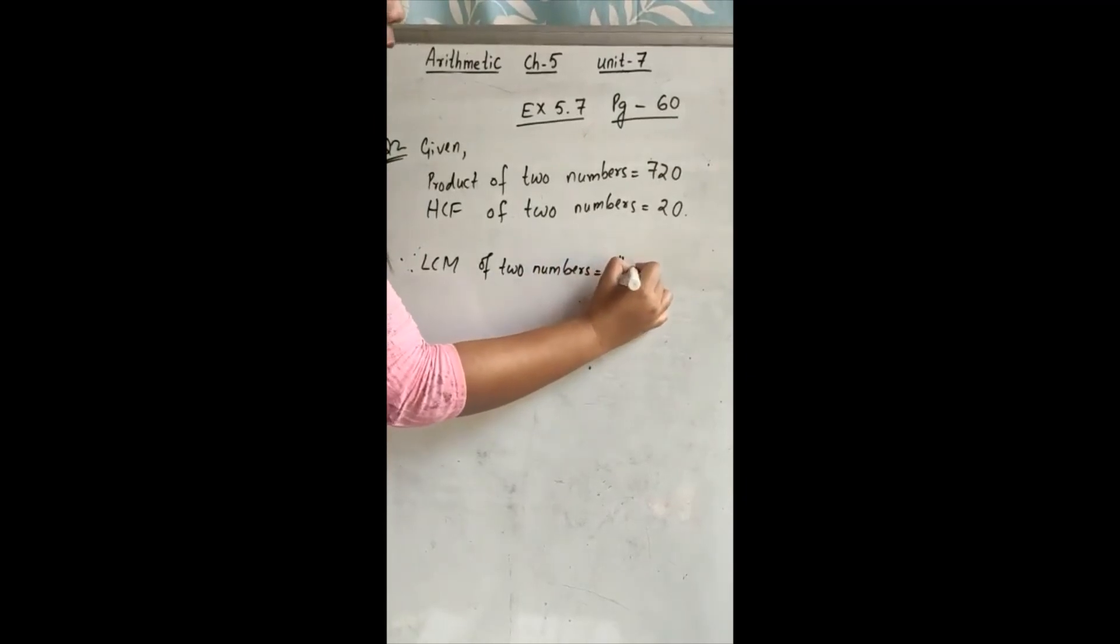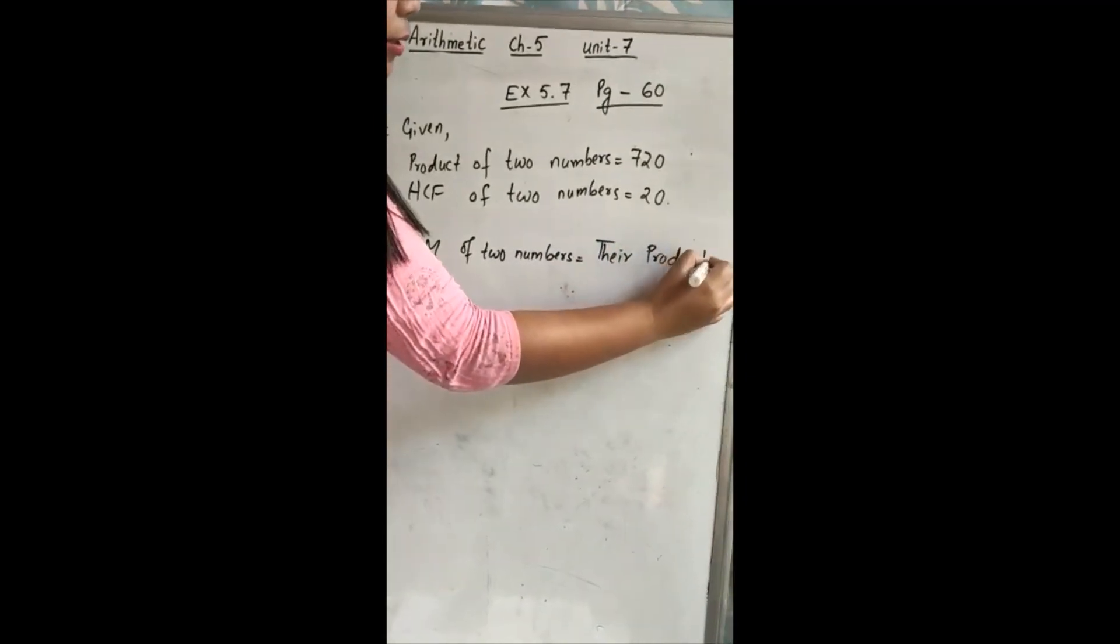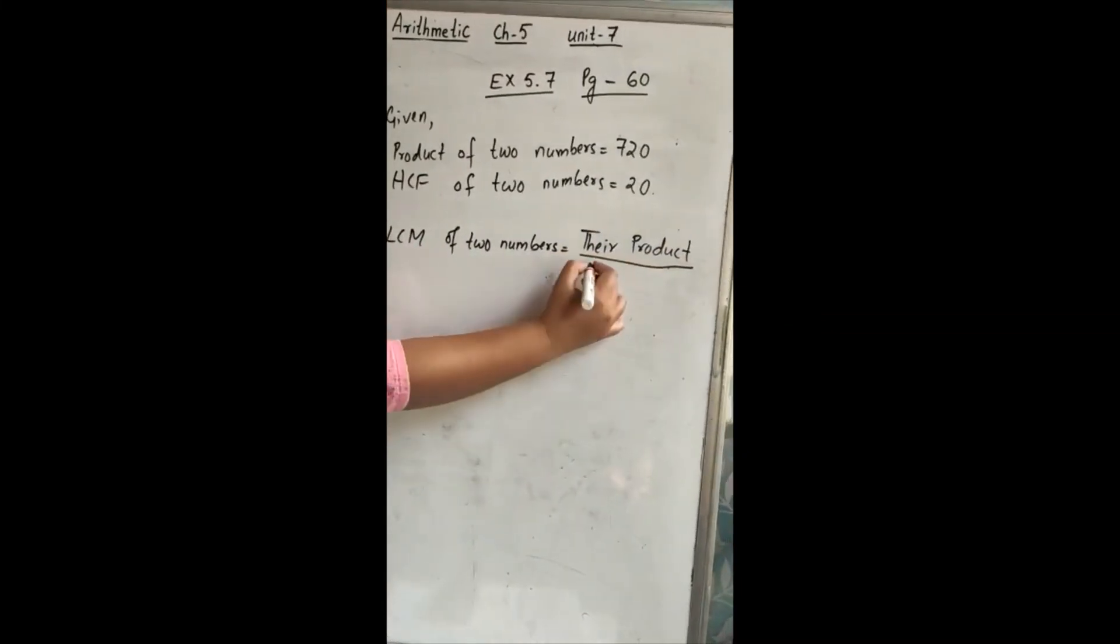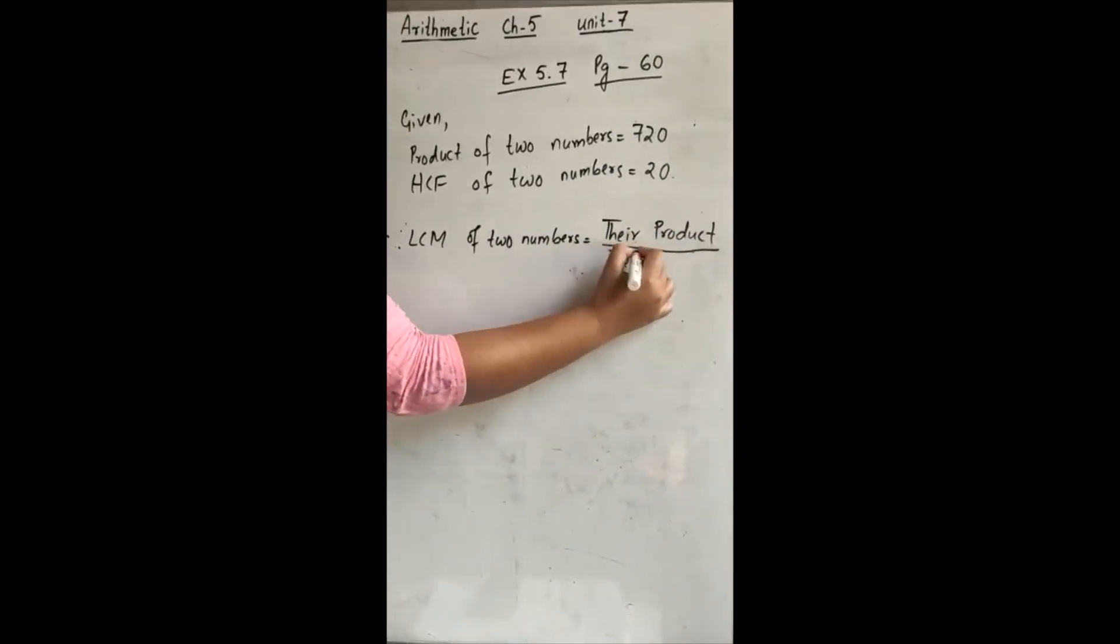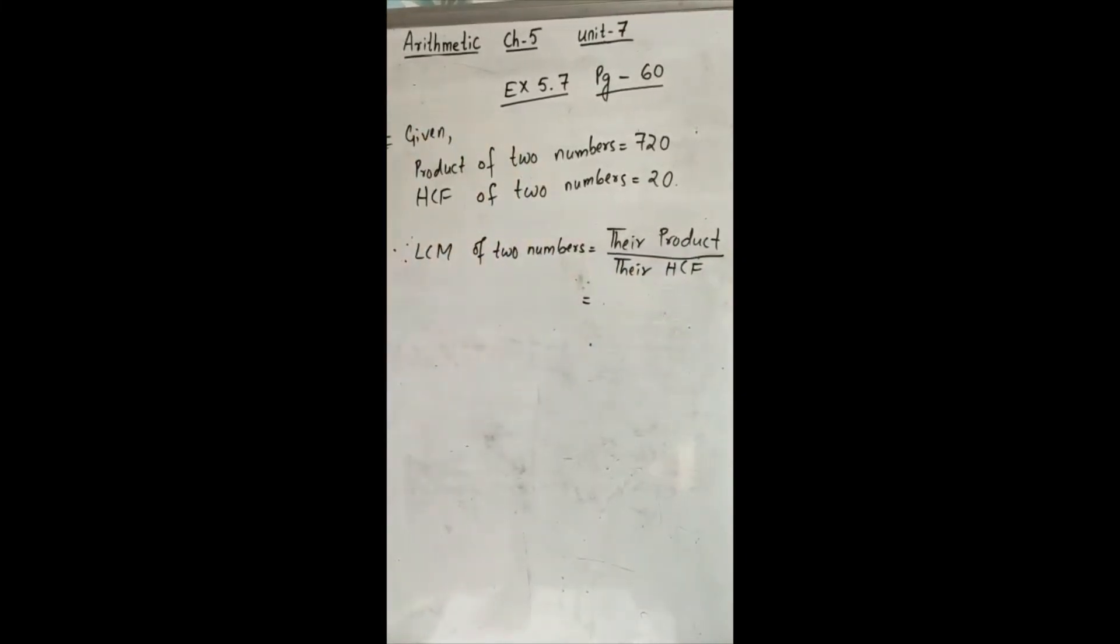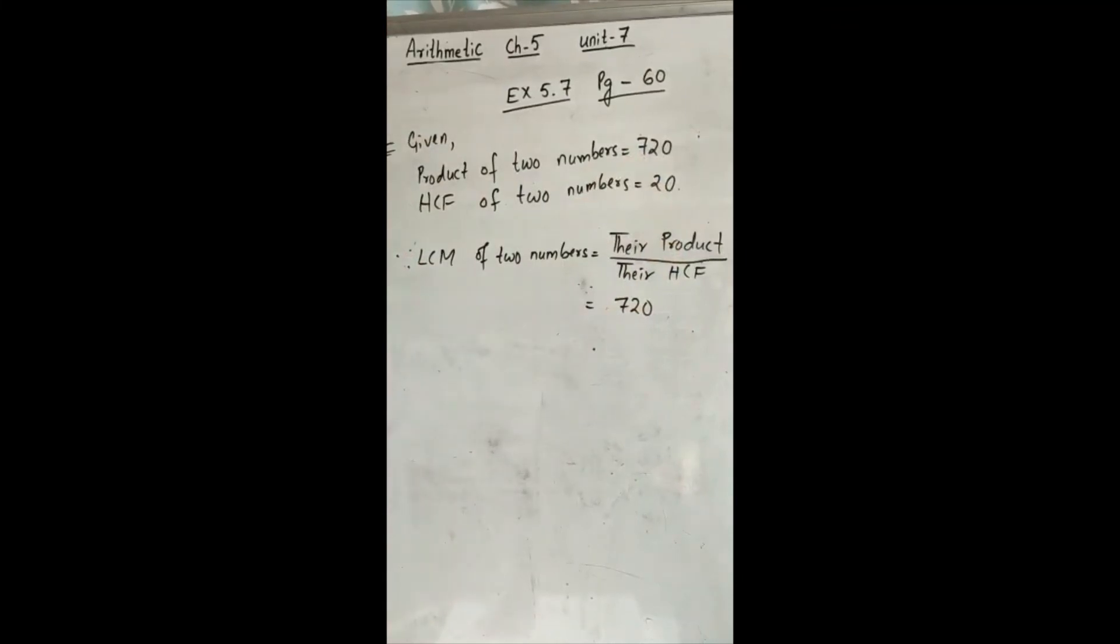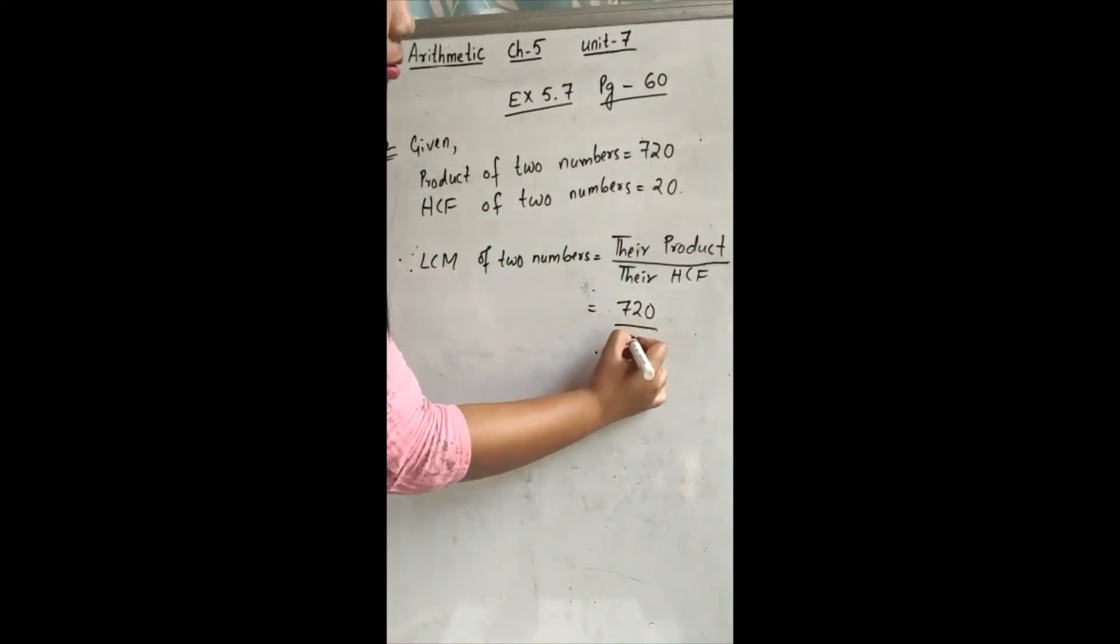What is the formula? What is the formula? Their product divided by their HCF. So what is their product? Product of two numbers. 720 and their HCF is given 20.